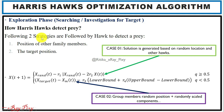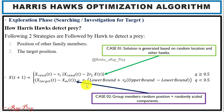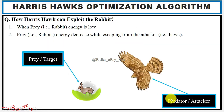Two strategies are followed by the Harris Hawk to detect prey. In case one, the solution is obtained based on a random location and other hawks. In case two, the solution is obtained from the group member random position and randomly selected components.